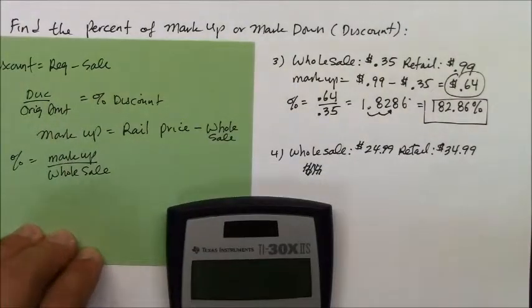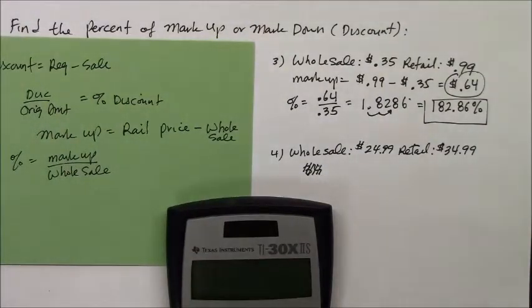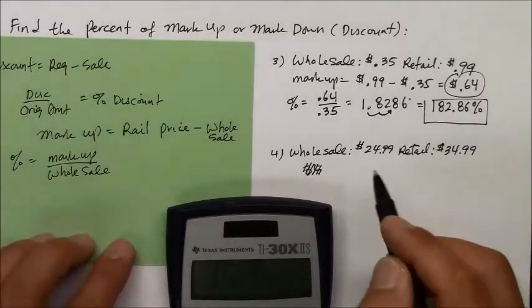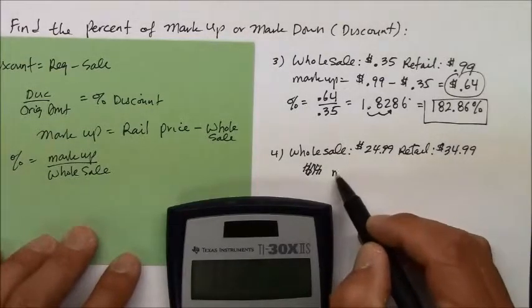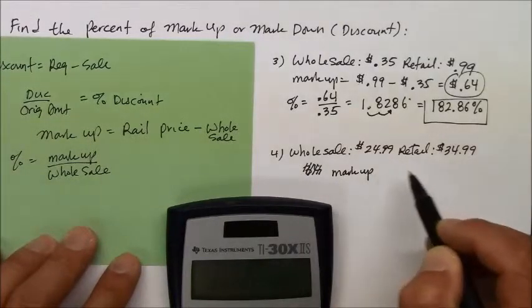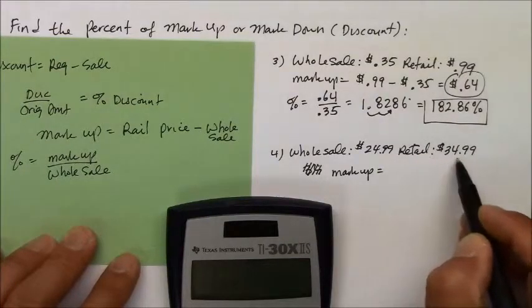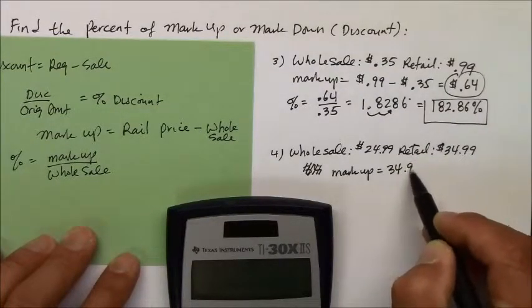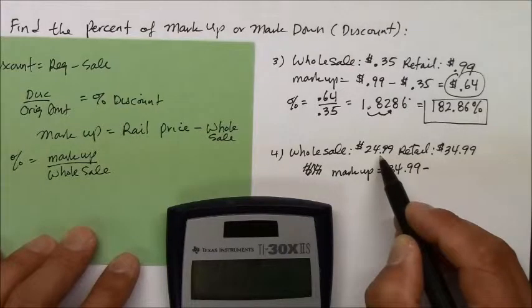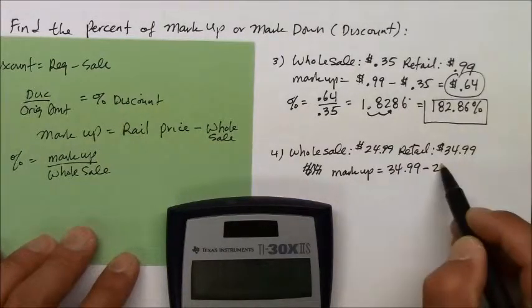Why don't you try number 4 on your own, then? To find the markup, I have to first take what I'm charging the customers, $34.99, minus what it cost me to get that, which is $24.99.